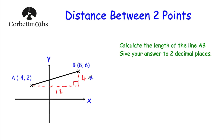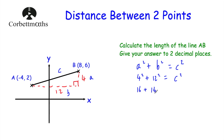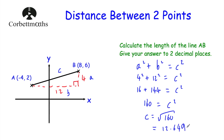We can now use Pythagoras's theorem to work out the length of the line AB. So a² + b² = c². I'll call a and b the two shorter sides and c the hypotenuse. So 4 squared plus 12 squared equals c squared. Now, 4 squared is 16 and 12 squared is 144, and that's equal to c squared. This is a calculator question, so 16 plus 144 equals 160. So 160 equals c squared, meaning c equals the square root of 160. When we square root 160 we get 12.64911..., and to two decimal places that rounds up to 12.65. So the length of the line AB is 12.65.